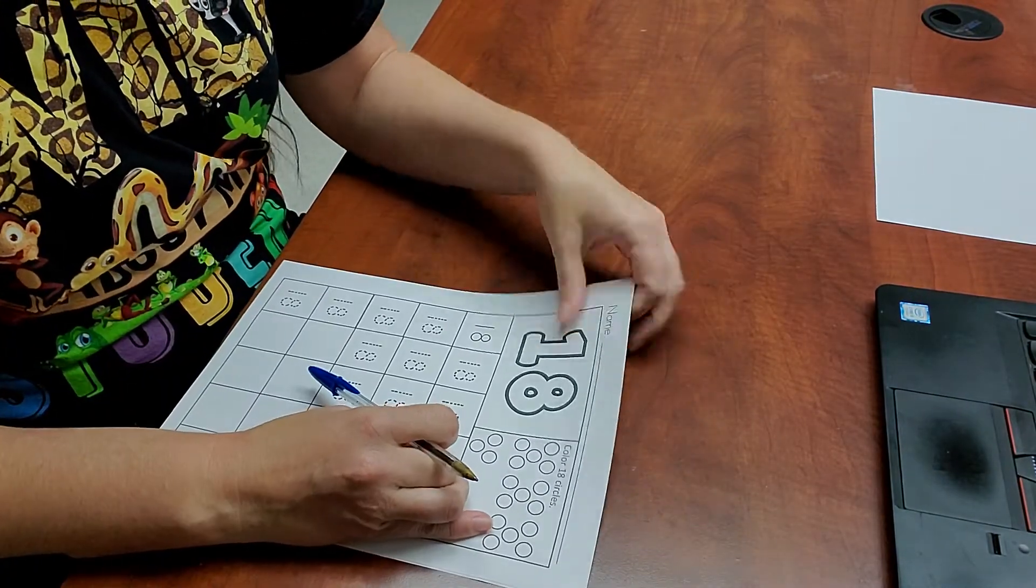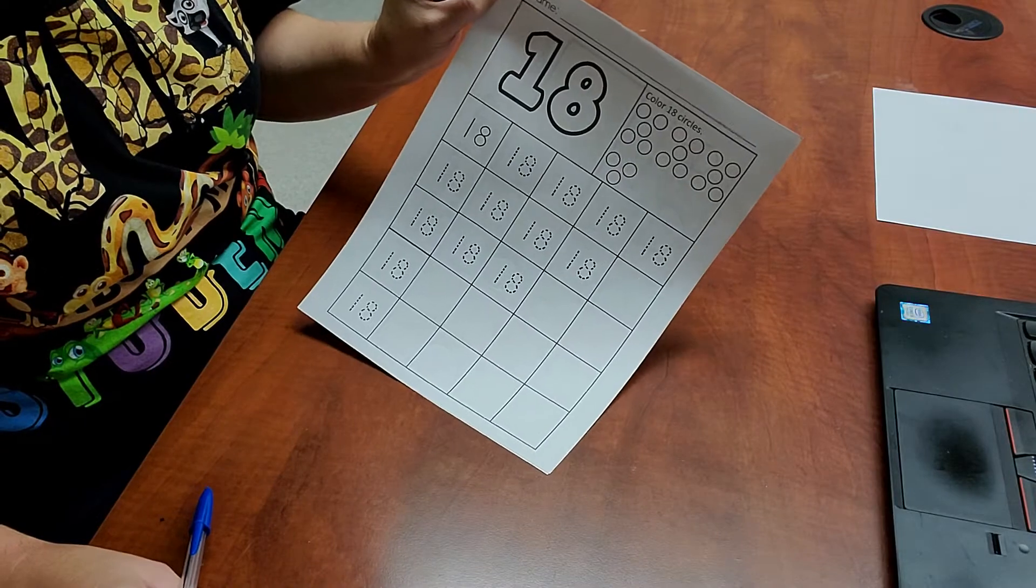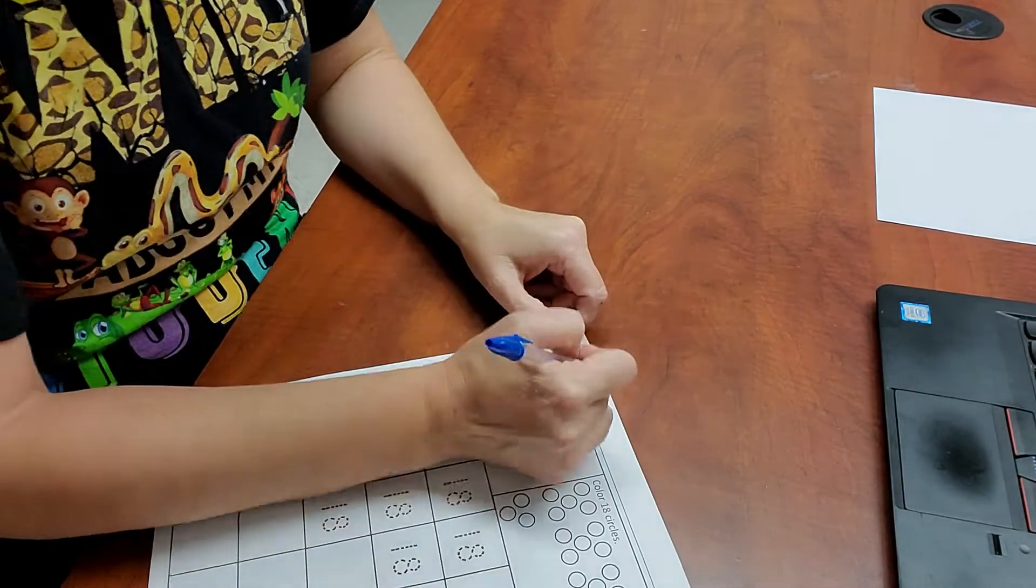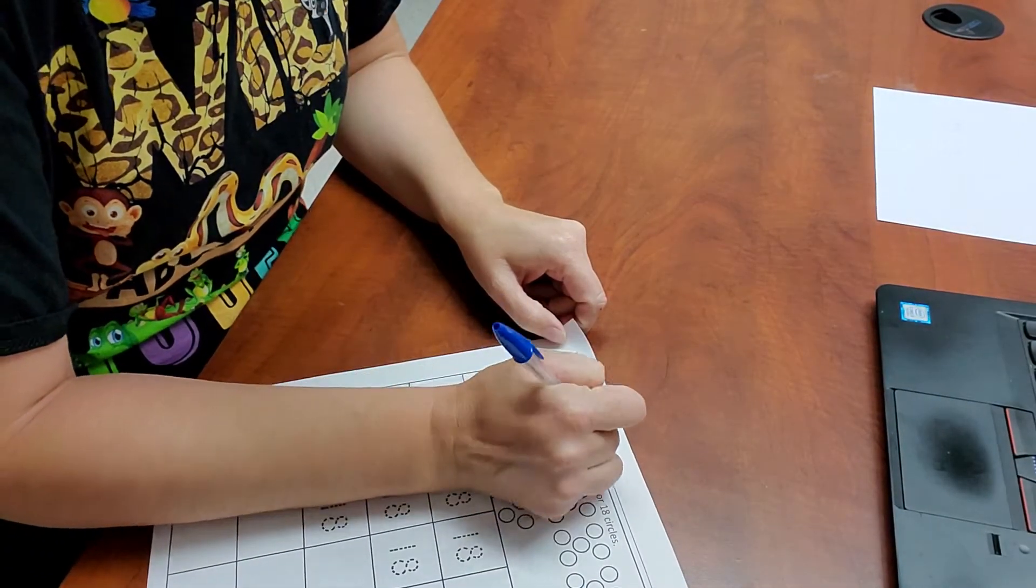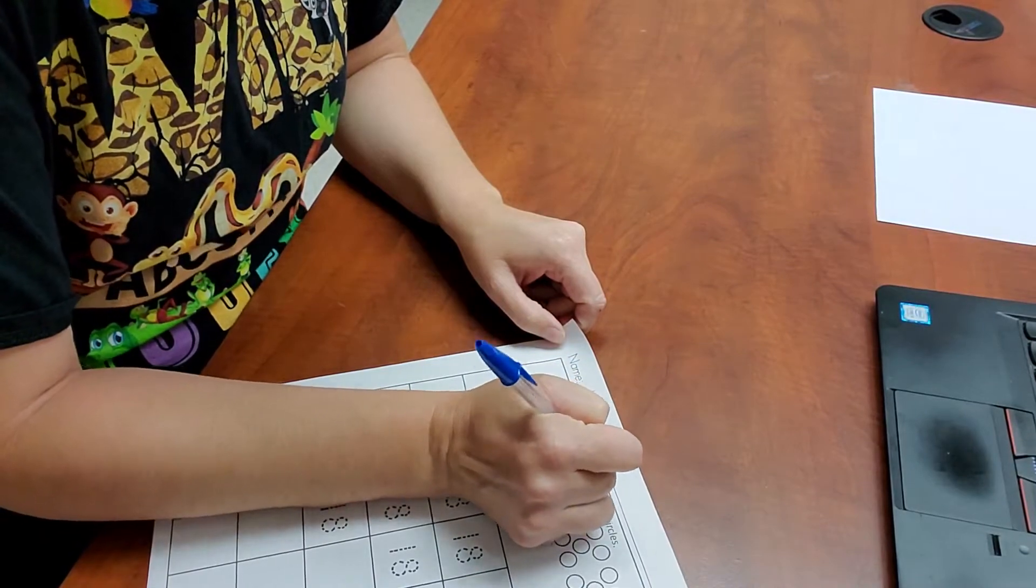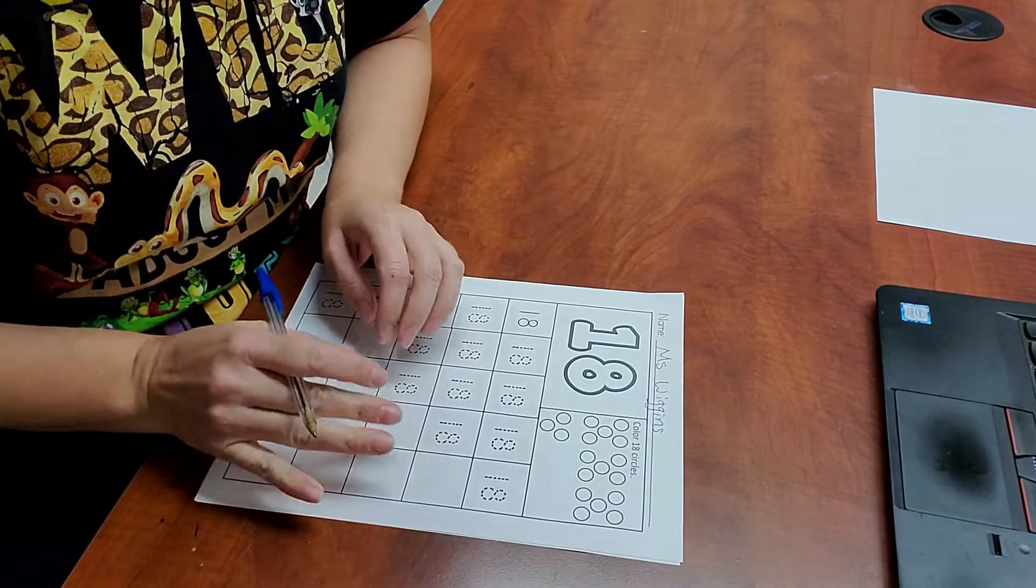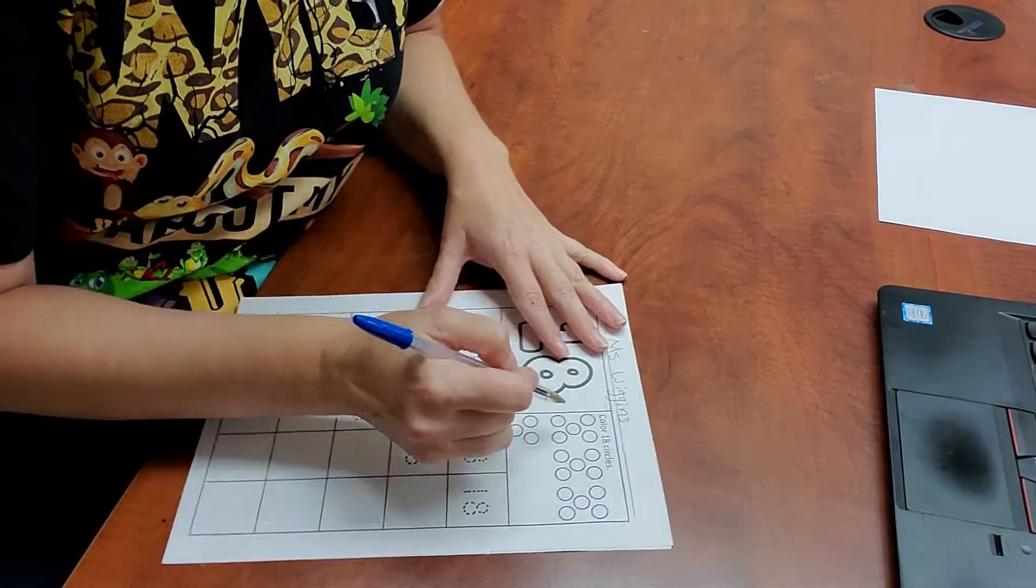All right, my friends. Now we're going to work on our number 18 paper. Go ahead and write your name at the very top. Count your circles. So you can do a little scribble in them.